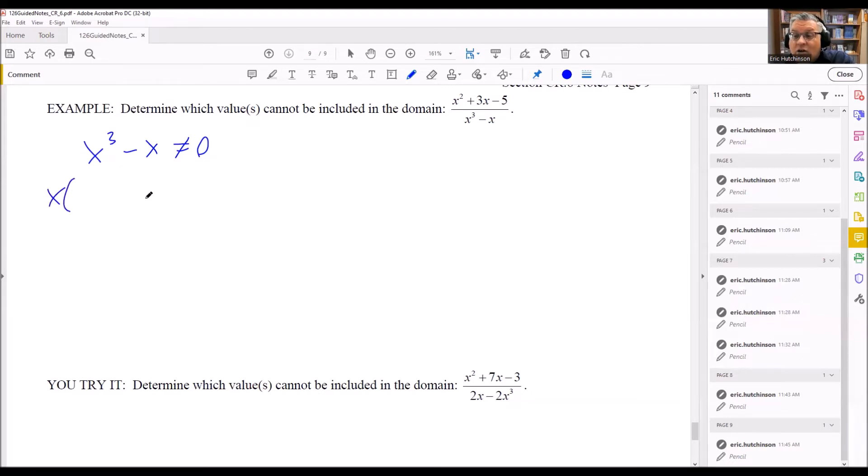So this one, we're going to factor out an x. That's a common factor here. When you factor that out, you'll be left with x squared minus one inside the parentheses. x cubed divided by x will give you x squared and negative x divided by x gives you negative one. Notice that what's left over is something where we can use the difference of squares on. So we're not done yet. We want to do one more factoring step.